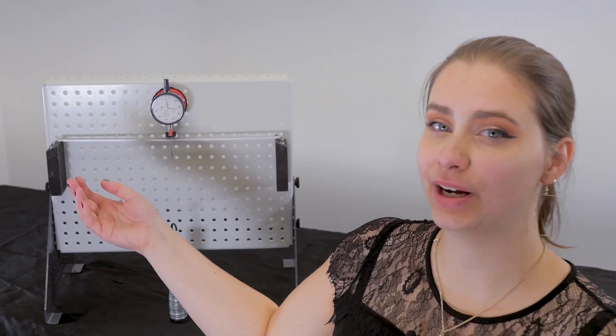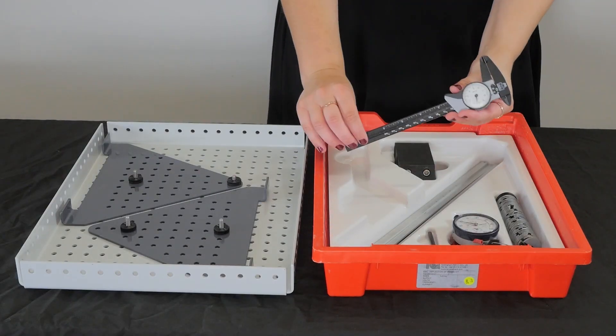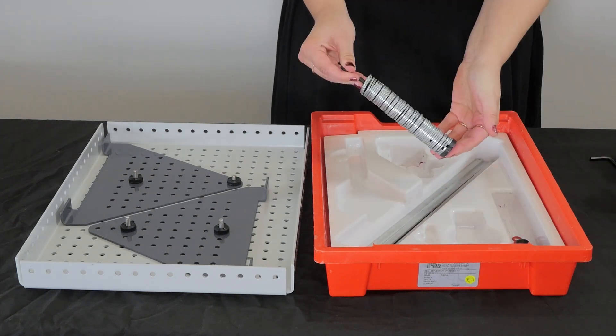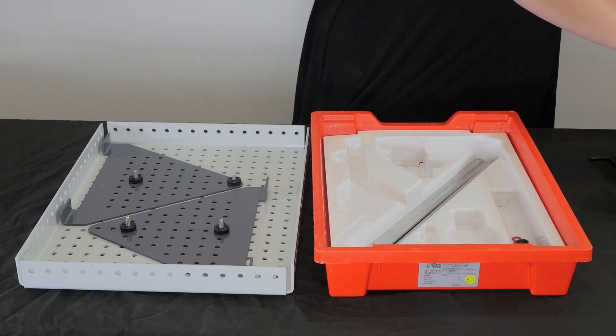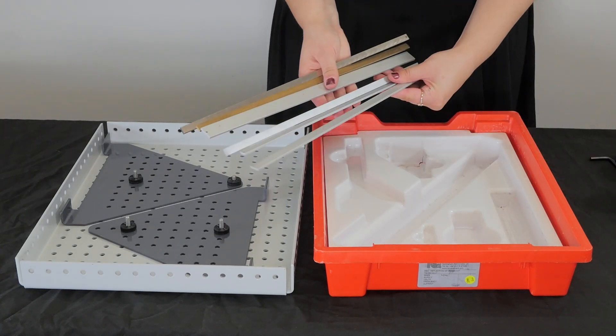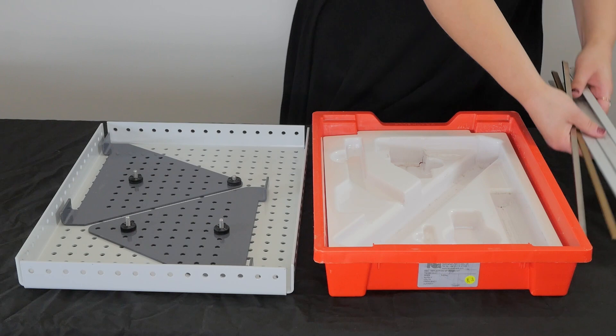Looking at the apparatus now, the kit comes in a plastic box which contains all the parts needed to perform the experiments. We have the weights and the weight hangers, dial indicator, dial caliper gauge, aluminium, brass and steel beams, and fixing blocks.